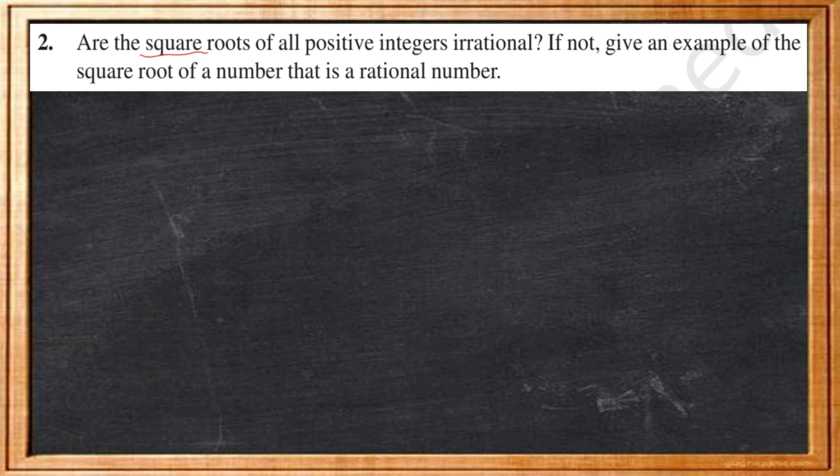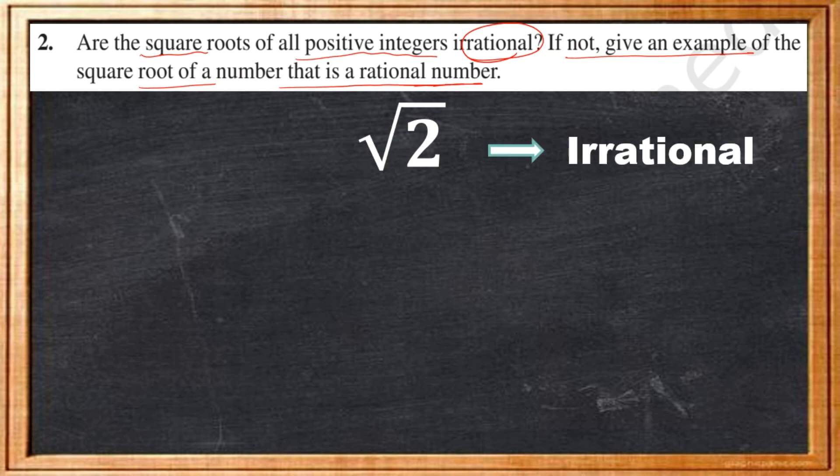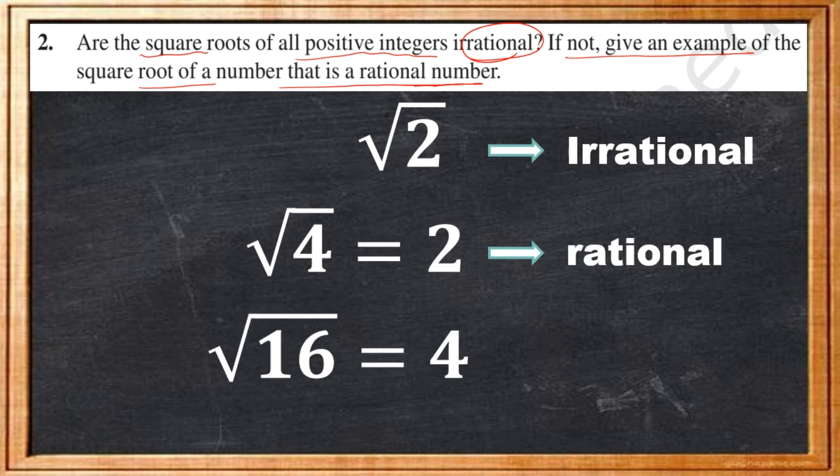Our second question is, are the square roots of all positive integers irrational? If not, give an example of the square root of a number that is a rational number. There are some numbers like 2 which give their square root as irrational. But, not all positive integers give irrational numbers on square root. For example, root 4 which gives 2 and it is a rational number. Similarly, root 16 which gives us 4 which is also a rational number.